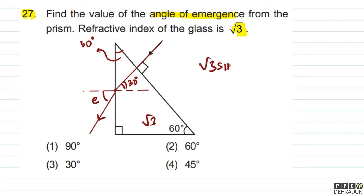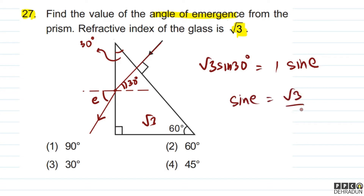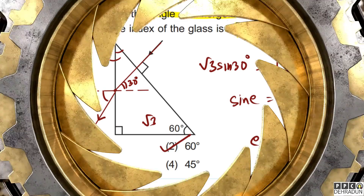Applying Snell's law: root 3 into sine of 30° equals 1 into sine of e. So sine e equals root 3 by 2, which means the angle of emergence is 60°. So the correct option for this question is option number 2.